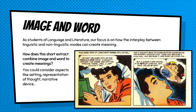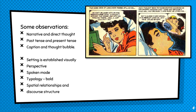Here we see our young female protagonist — obviously she's in love with a guy who she's worried doesn't love her back. As you pause the video, think about aspects like the setting, the representation of thought, narrative device, and particularly how the interplay between what you can see and what you can read is combining to create meaning. The interplay between narrative and direct thought in this short comic is a useful way of illustrating how visual and linguistic aspects can combine to present meaning.